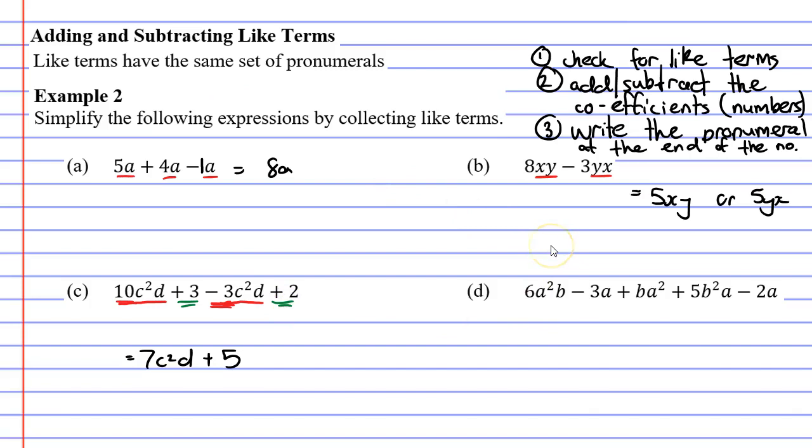Moving on to question d. We're just going to underline like terms. So we have the set of pronumerals a²b. We can also see a²b here in a different order and we need to be careful to note that this is not the same as a²b. This is b²a. So we'll just focus on the two terms that are like at the moment remembering if there's no coefficient there's technically a 1.